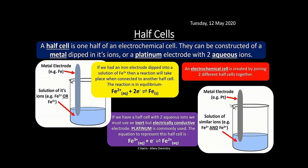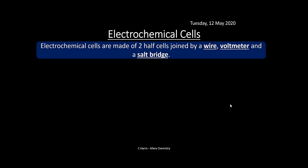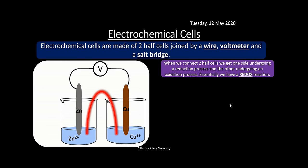A full electrochemical cell is created by joining two half cells together with a wire, a voltmeter, and a salt bridge. When connected, one half cell undergoes reduction and the other undergoes oxidation — giving us a redox reaction. The voltmeter measures the potential difference between the two half cells, called the EMF or E cell.